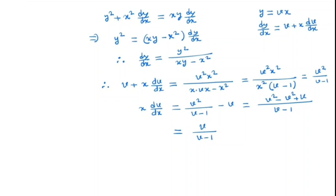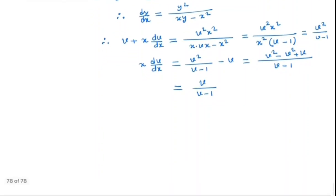So here we can separate v and x. So in the next step we separate v and x. So we have v minus 1 by v dv is nothing but dx by x. So here the integrals are separated. In the left hand side we have integral in v.